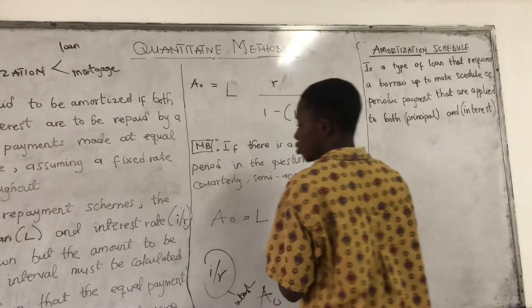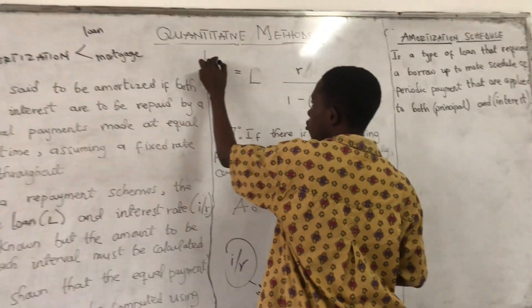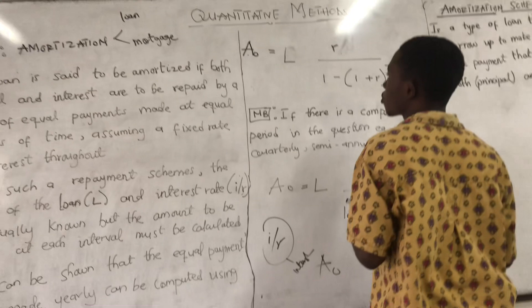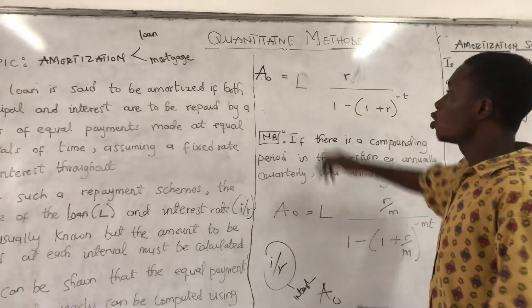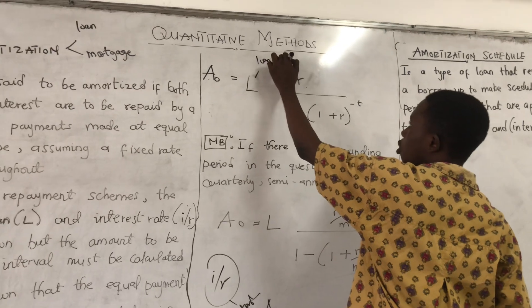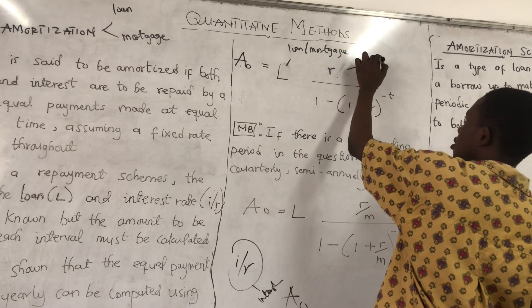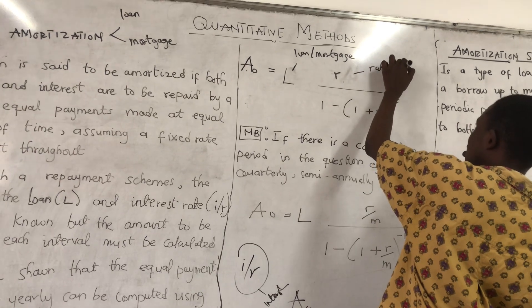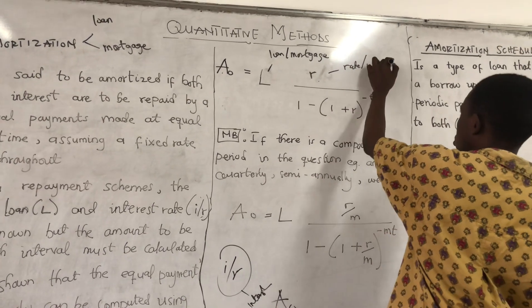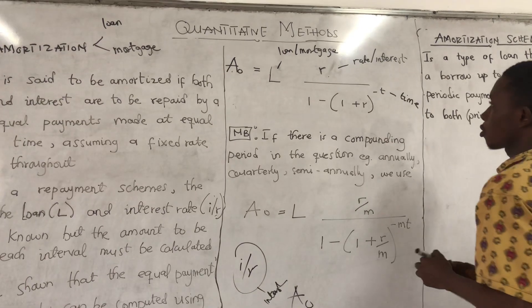A with a subscript O is equal to... where L denotes the loan or the amortigate, R is the rate or the interest, and C is the time.